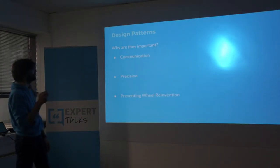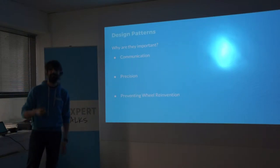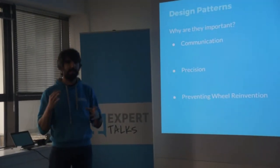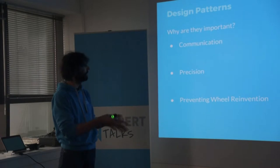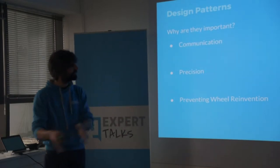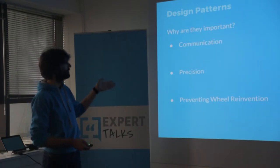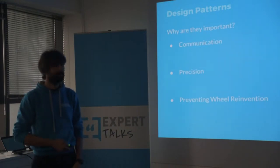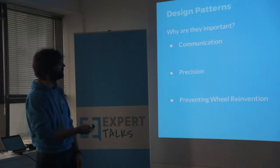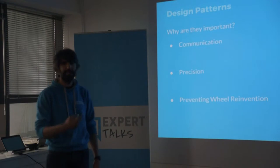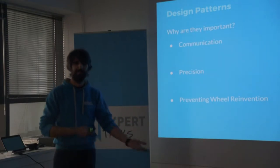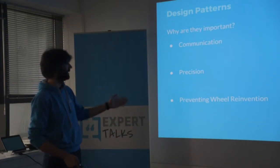Why are they important? It's mostly about communication. When you talk about a piece of code, you say 'I've used this design pattern' and the other person knows exactly what you meant. It's also about precision - when you implement it, there are variations, but you know exactly what you want to do, like a recipe. There's also preventing wheel reinvention - instead of continuously reinventing the wheel, you learn to identify these patterns in code and say 'here's the strategy' or 'I would need an observer here.'